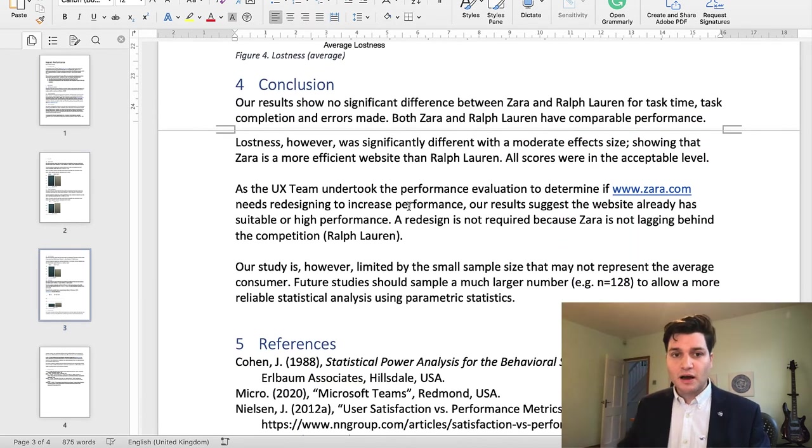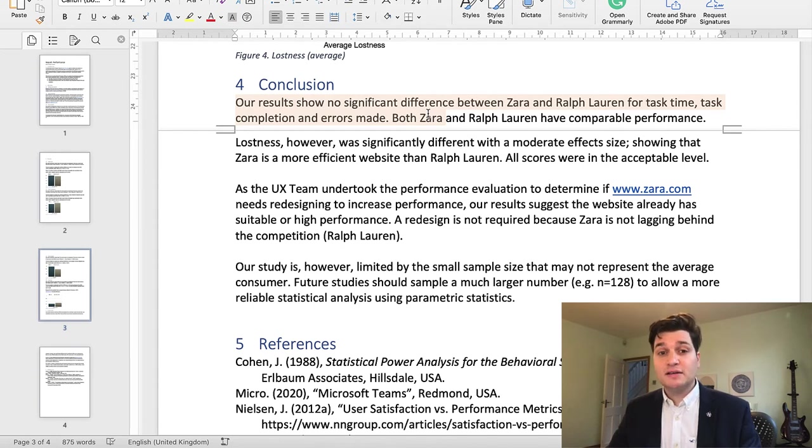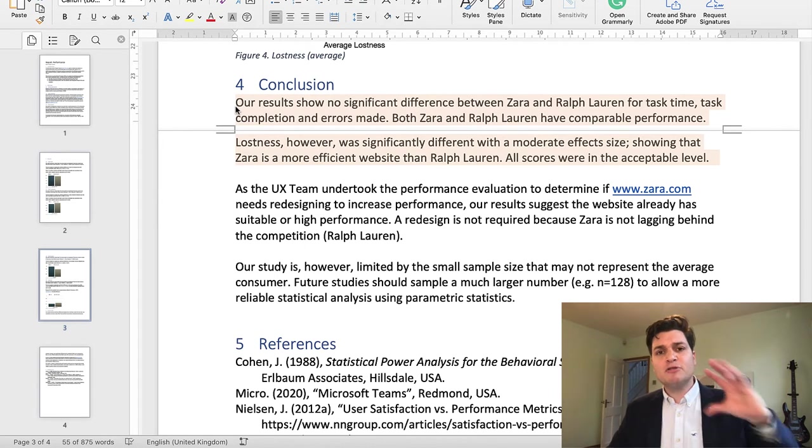Then we get into our conclusion. Our conclusion gives the basic results. So our results show no significant difference between Zara and Ralph Lauren for task time, task completion, and errors made. Both Zara and Ralph Lauren have a comparable performance. Lostness, however, was significantly different with a moderate effect size, showing that Zara is a more efficient website than Ralph Lauren. All scores were at an acceptable level. So that paragraph is just summarizing what the findings were. If somebody's jumped over the results and got just to this first part of the conclusion, they're going to have an idea about what happened. Don't trust the reader to actually read everything. This conclusion really helps.